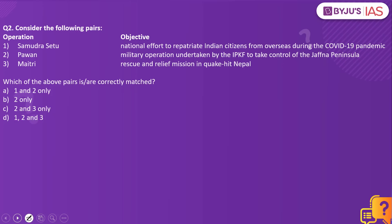Consider the following pairs — an operation on one side and its objective on the other. Operation Samudra Setu: national effort to repatriate Indian citizens from overseas during the COVID-19 pandemic. Operation Pavan: military operation undertaken by the Indian Peacekeeping Force to take control of the Jaffna Peninsula. The answer is 1, 2, and 3.